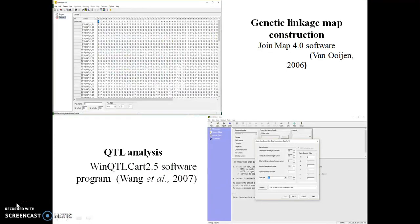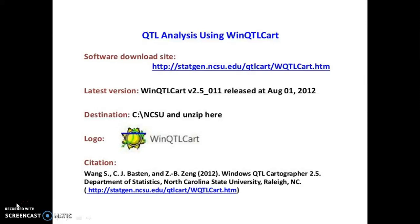The linkage map was constructed using JoinMap 4.0 software. SNP marker orders and positions were determined using maximum likelihood in Kosambi model with a minimum LOD score limit of 4.0. Visualization was done with software MapChart 2.30. QTL analysis was done with WinQTL 2.5 using composite interval mapping (CIM) with 1.0 cm scanning interval between markers, model 6, and other default values.